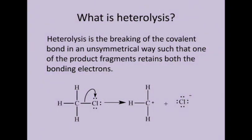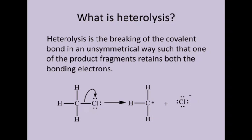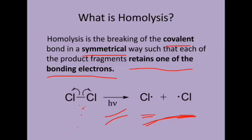Next, we can see what is meant by heterolysis. Heterolysis is another fashion of breaking a covalent bond. In heterolysis, it is the breaking of a covalent bond in an unsymmetrical way. This bond consists of two electrons, and both the electrons go to one of the atoms. So, heterolysis is the breaking of the covalent bond in an unsymmetrical way such that one of the product fragments retains both the bonding electrons.